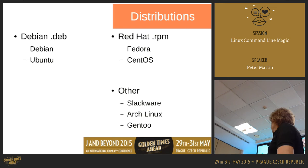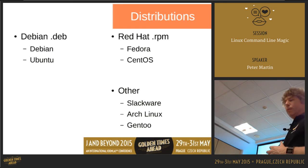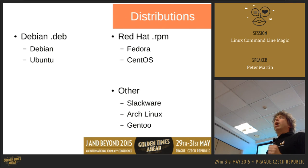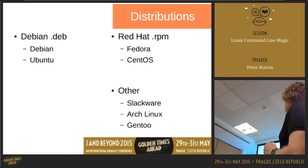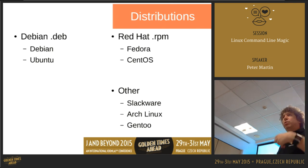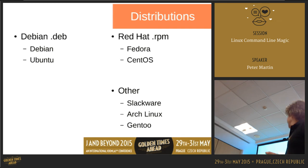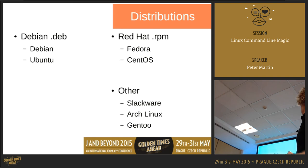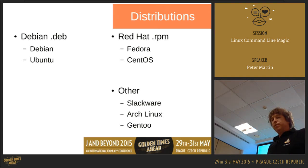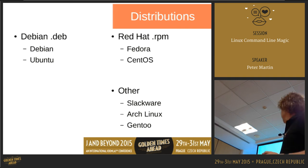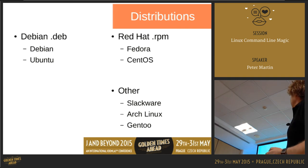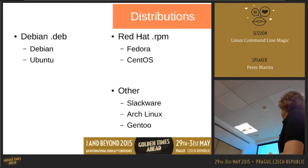If you want to use Linux on a desktop or server you have to choose a distribution. There are roughly two kinds: the Debian kind, where you install binary packages using .deb, and Red Hat and its variants using the Red Hat Package Manager — like Fedora and CentOS. It's personal preference. I started with Ubuntu and now use Debian. Linux Mint is also Debian-based.